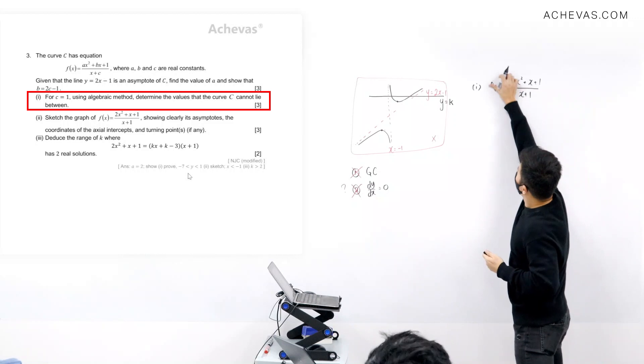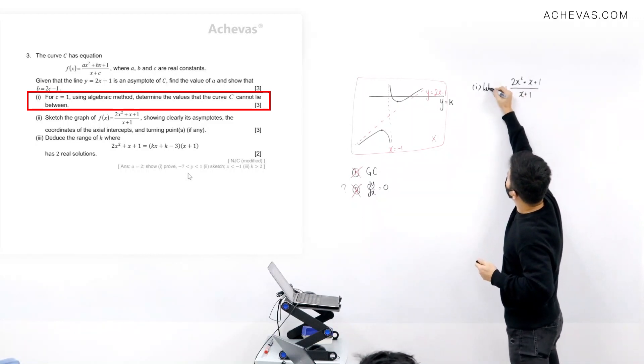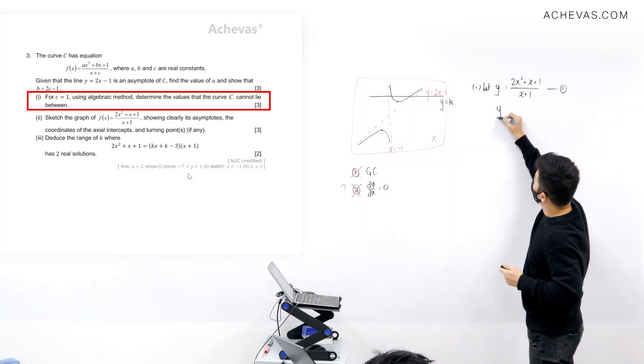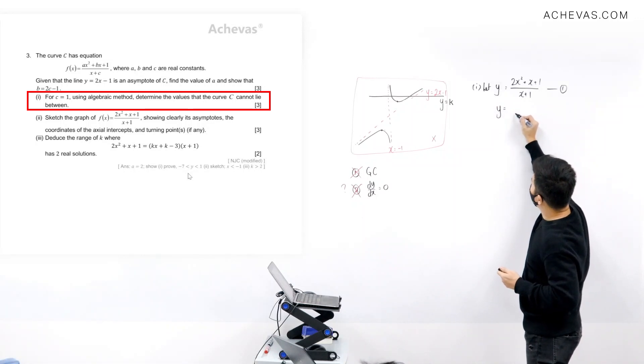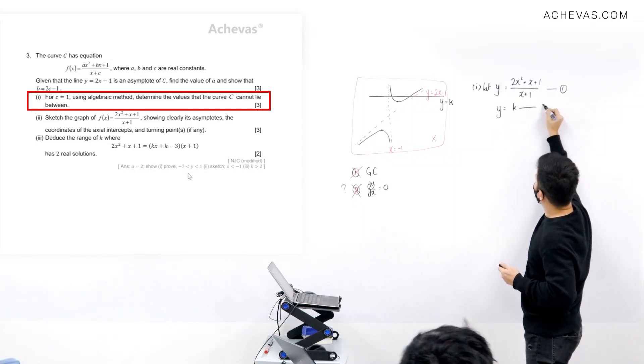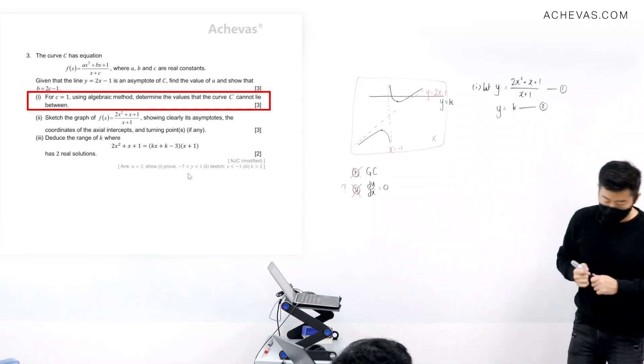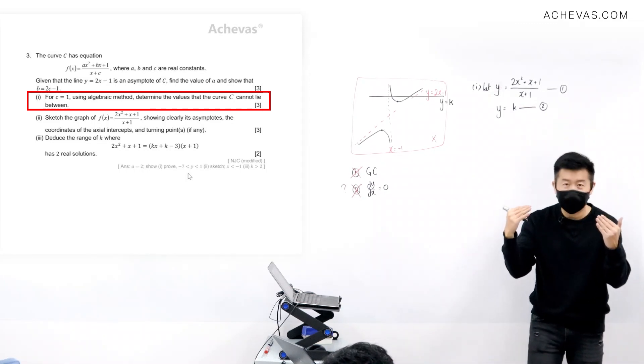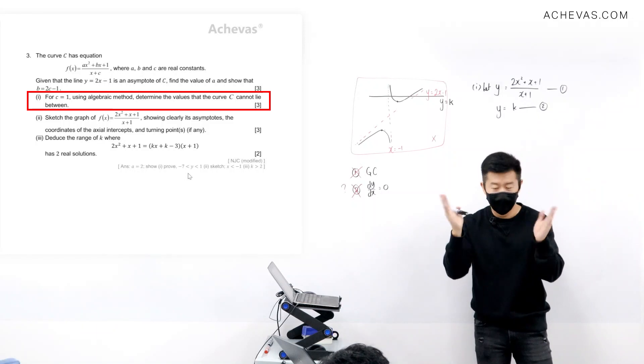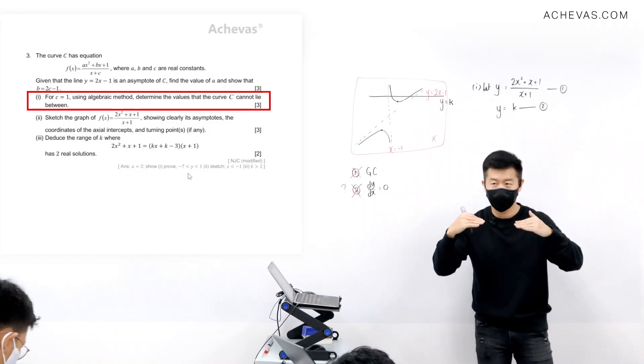So I am going to let this be my first equation. I'm going to let y be equal to k, be my second equation. So I'm going to try to work on two lines intersecting, two graphs intersecting. The curve is going to be intersecting with the horizontal line.